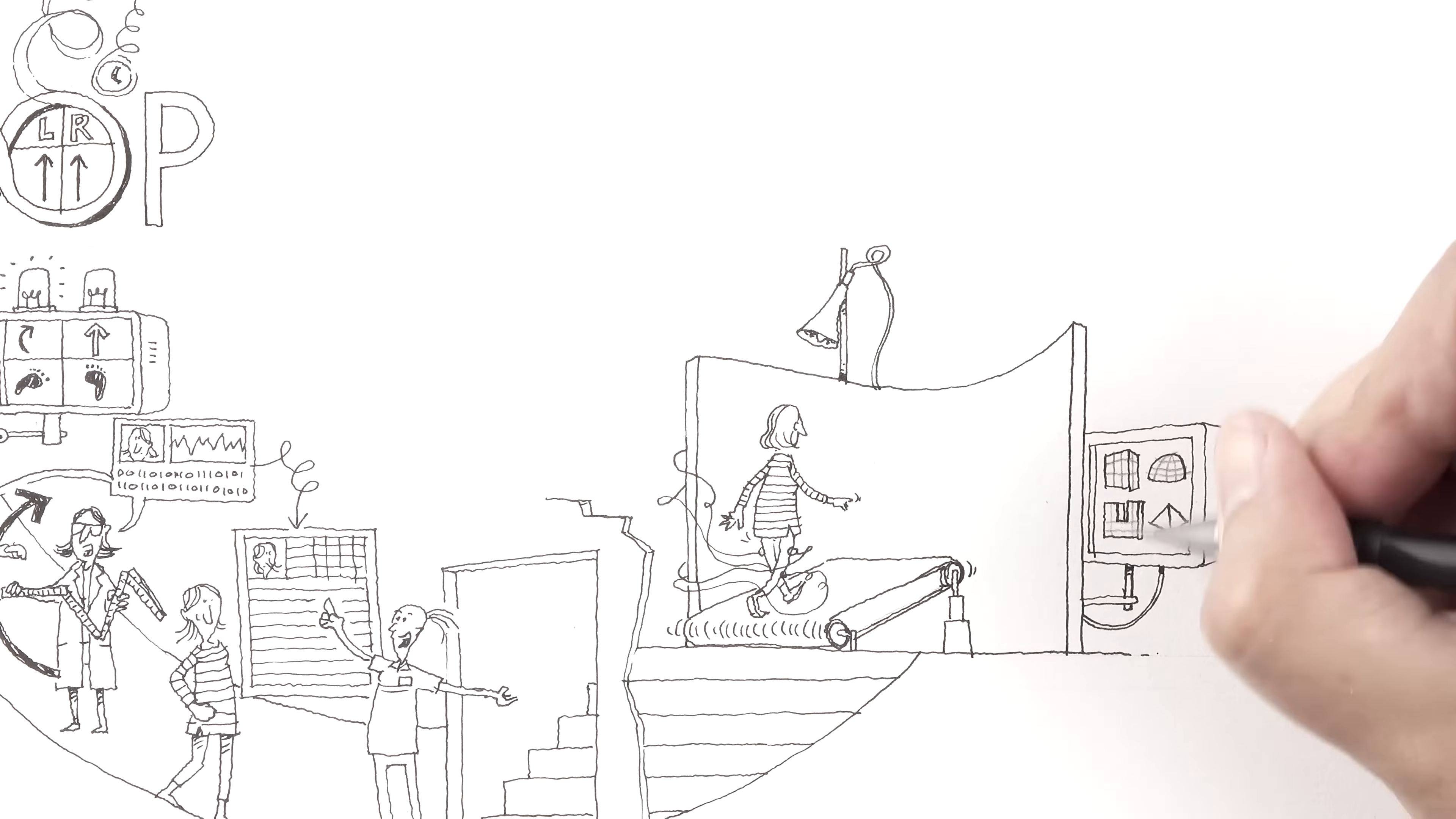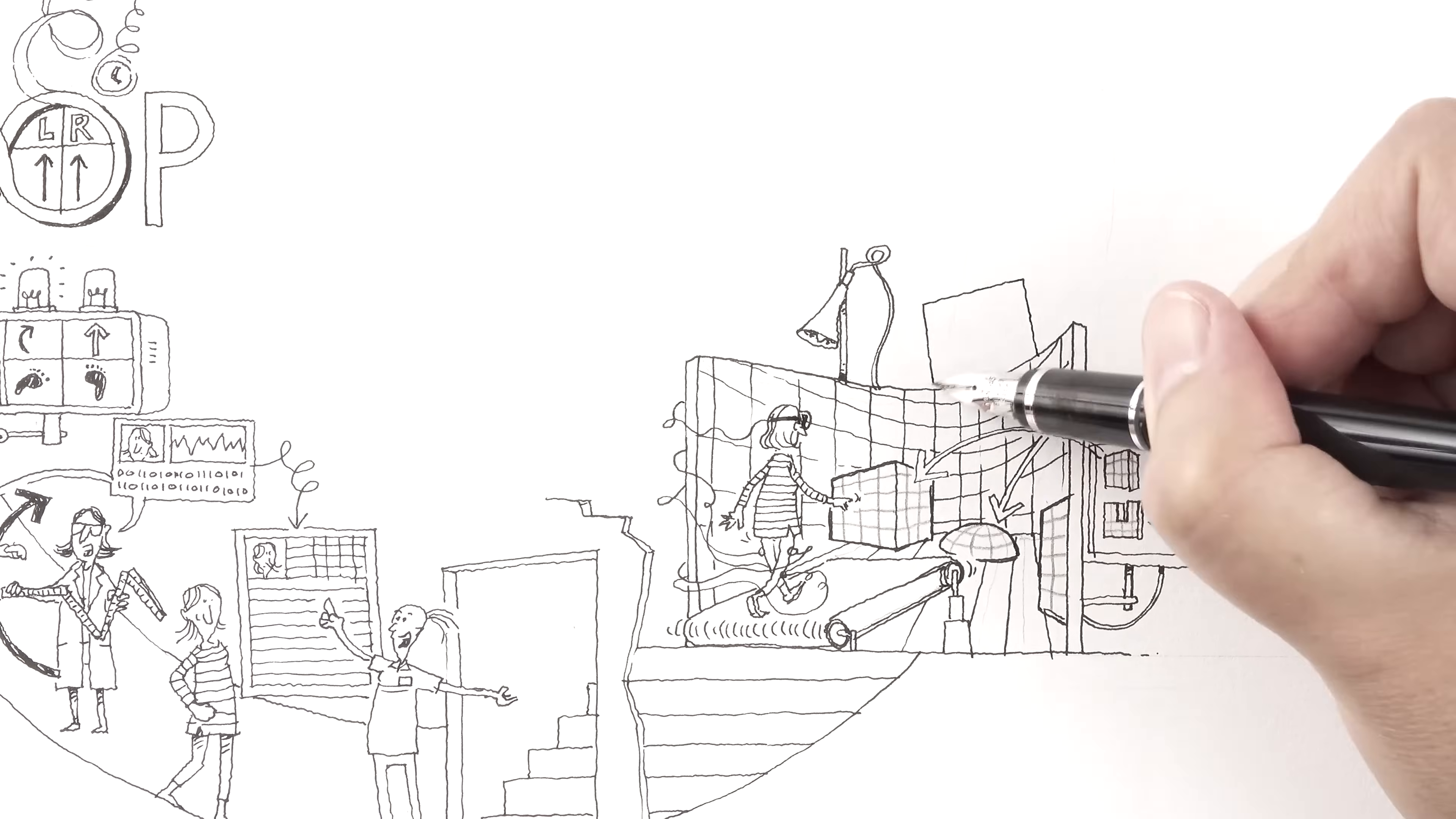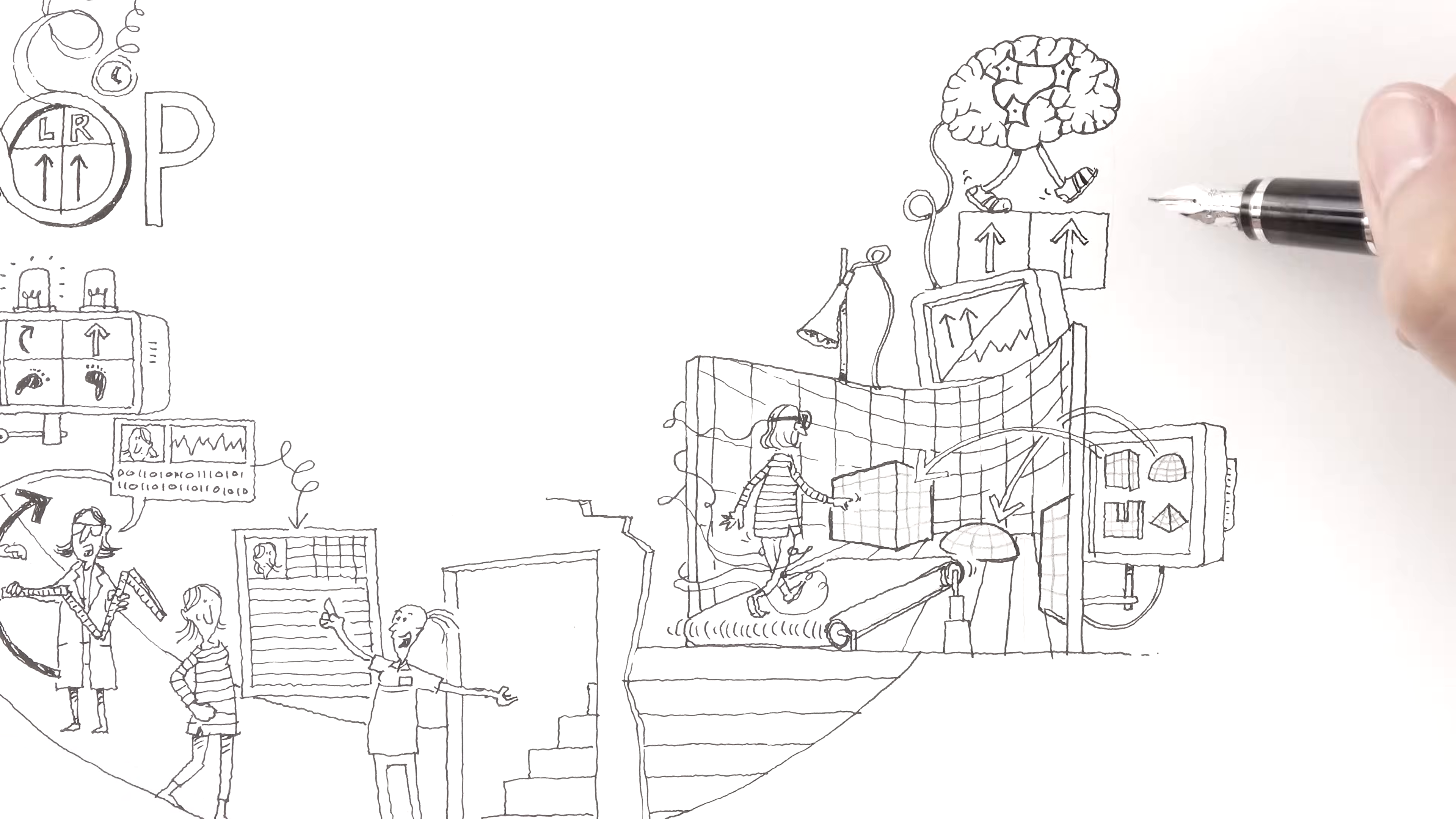Using augmented reality, digital obstacles and movement sequences can be inserted directly into the training on a screen or in goggles. By constantly visualising movement quality and performance, new neural connections are formed in the brain and the correct walking pattern is relearned.